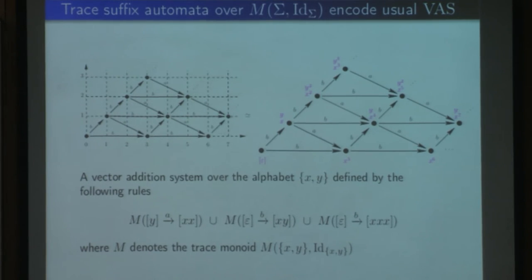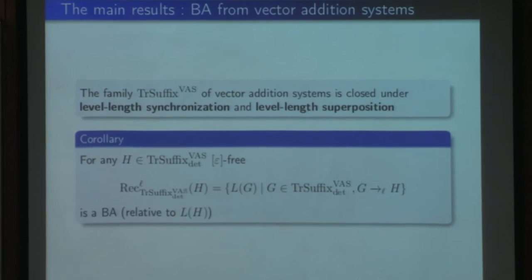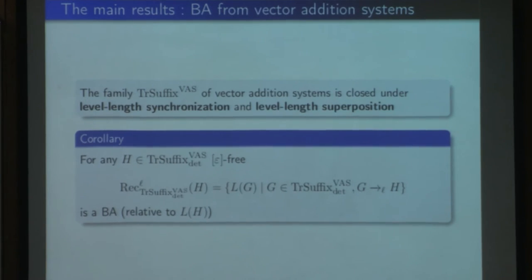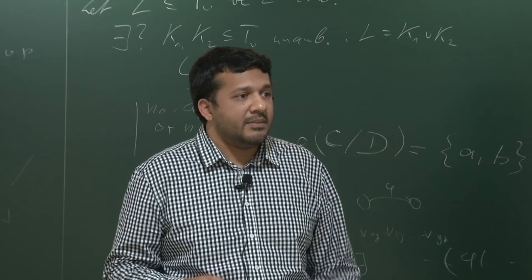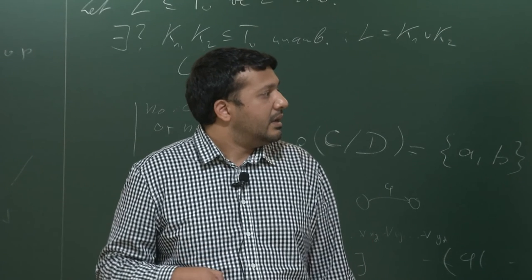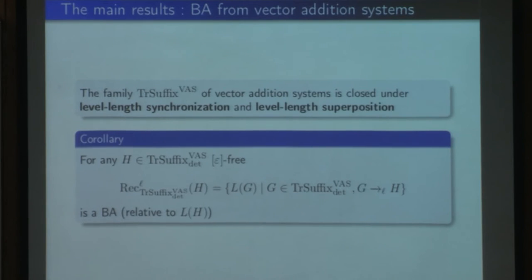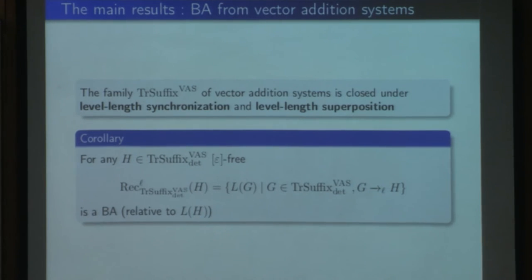The family of vector addition systems is closed under level length synchronization and level length superposition. So we have various Boolean algebras from vector addition systems: we just consider any deterministic vector addition system H, and all languages accepted by deterministic vector addition systems that are length-reducible to H form a Boolean algebra.